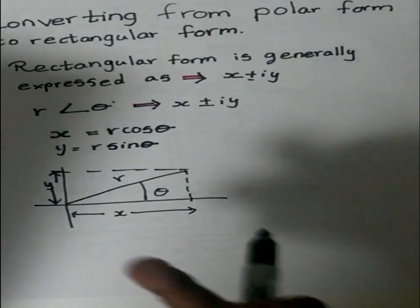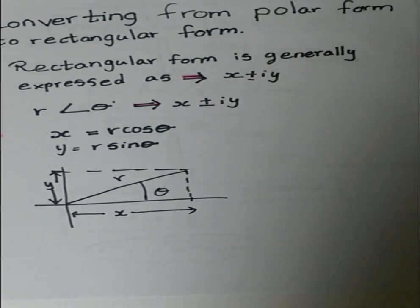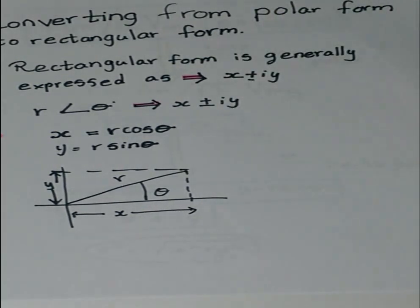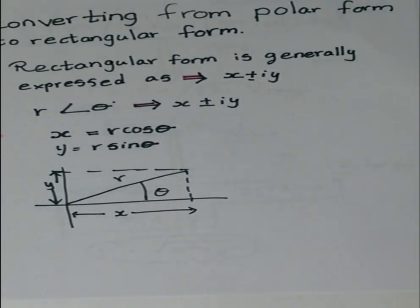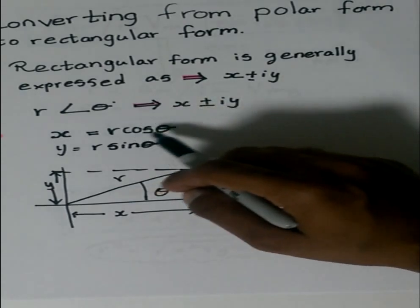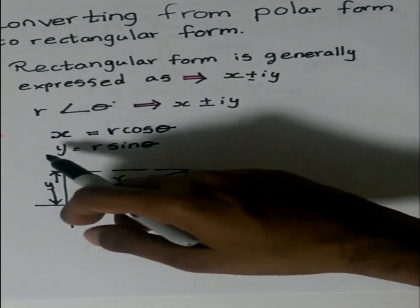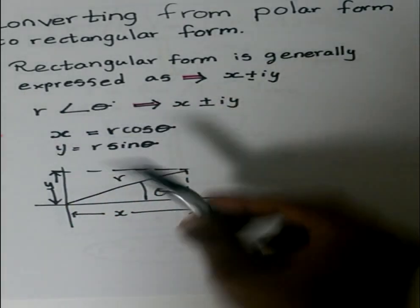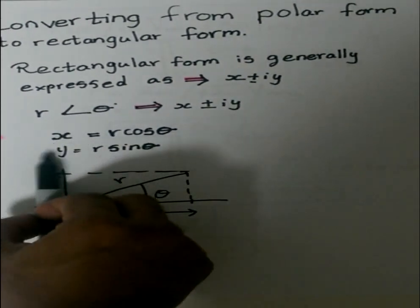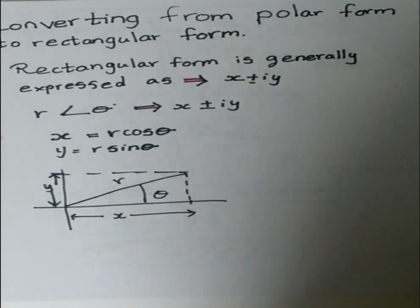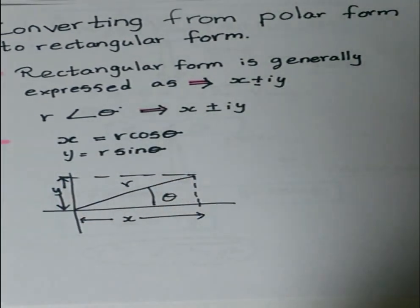Now when we go to convert it from a polar form to a rectangular form, first of all we'll need to know a rectangular form is generally expressed in terms of x + iy. So r cos θ is x and y equals r sin θ. We'll just derive from this where x is r cos θ and y is r sin θ.